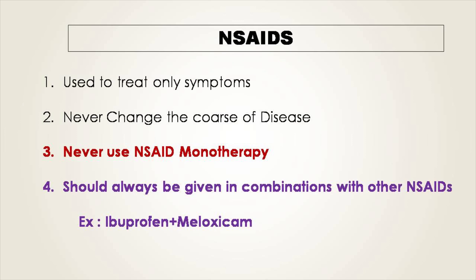NSAIDs are used to treat the symptoms of rheumatoid arthritis, but these drugs never change the pathology of the disease. If you want to change the pathology, you need to use DMARDs, biological agents, or steroids. NSAIDs are only meant to treat the symptoms.